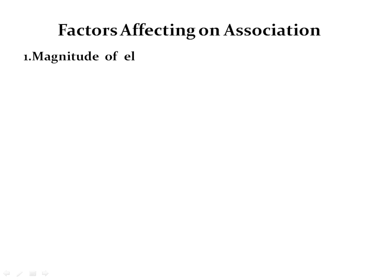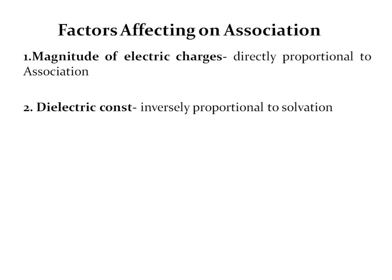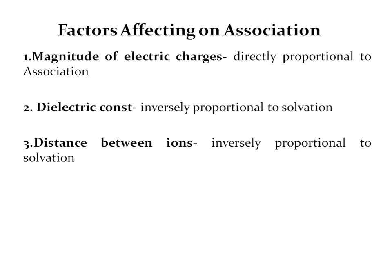Now we will see the factors affecting association. First, the magnitude of electric charges is directly proportional to association — as the magnitude of electric charges increases, association increases. Then, as the dielectric constant increases, solvation decreases; the dielectric constant is inversely proportional to association. The distance between the ions is also inversely proportional to association.